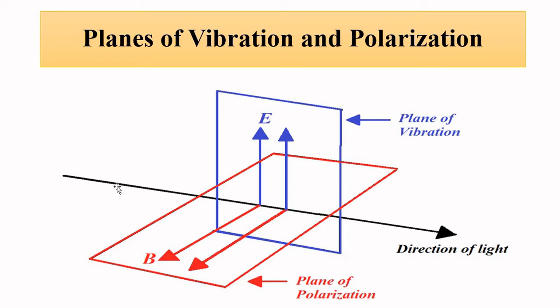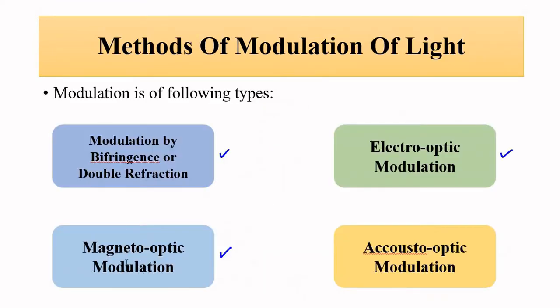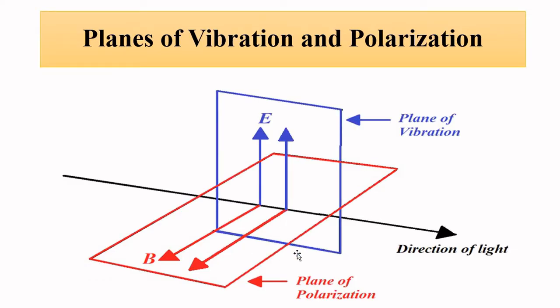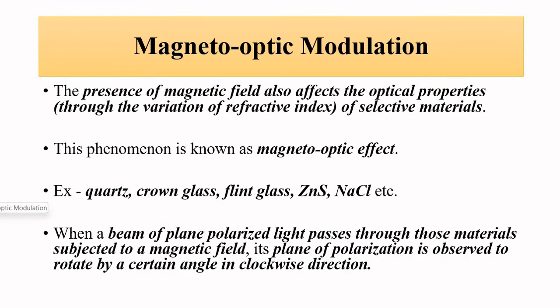One way of modulating a light signal is tilting or changing the direction of this plane — rotating it by a certain angle. This is achieved in the magneto-optic modulation method, where because of the application of an external magnetic field, the plane of polarization gets rotated, and hence the plane of vibration is also tilted or rotated by a certain angle. That is the modulating parameter.